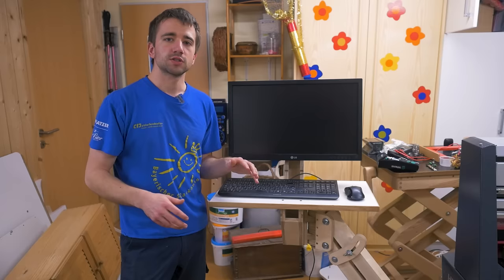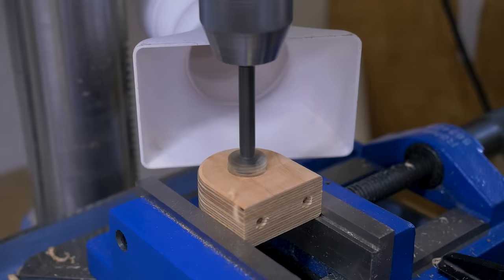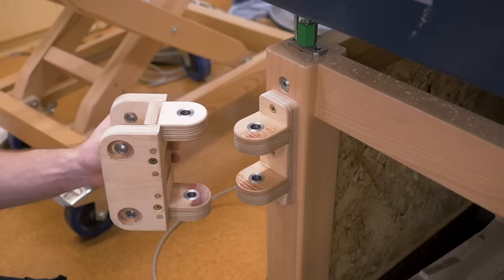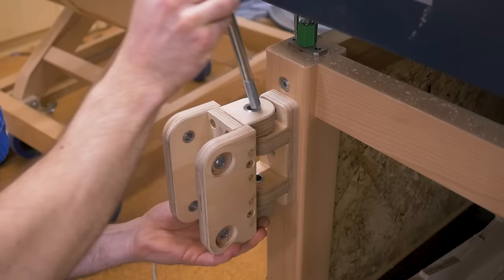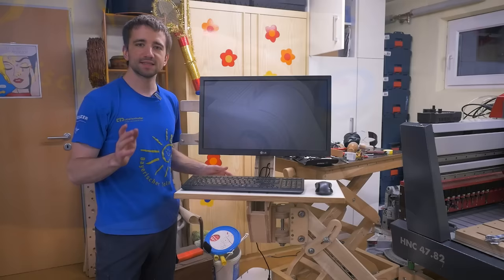So before I move on and wire stuff up, I need to beef up the mechanism with some steel. I turned a bunch of bushings, pressed them into all major joints, and glued all parts together with dowel reinforcement.